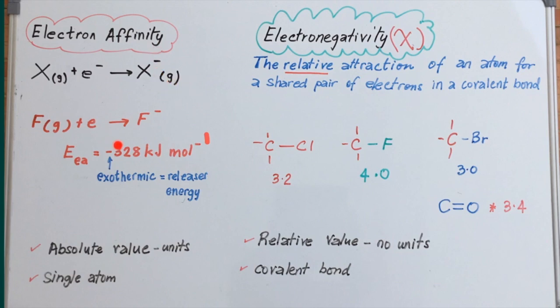But the actual value that's given is based on a mole of these atoms receiving a mole of electrons to form a mole of ions. So for one mole of fluorine atoms, gaining one mole of electrons to form one mole of fluoride ions, the energy released in the exothermic process is 328 kilojoules per mole.